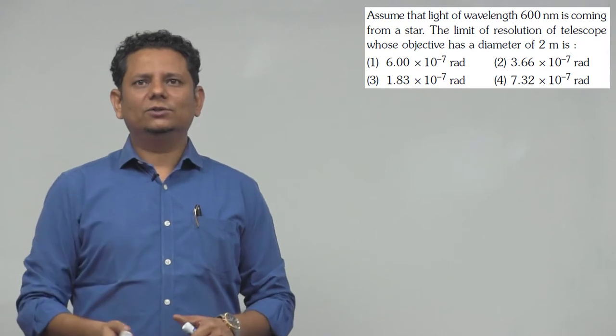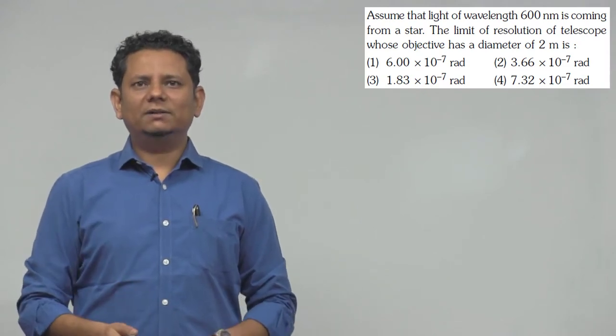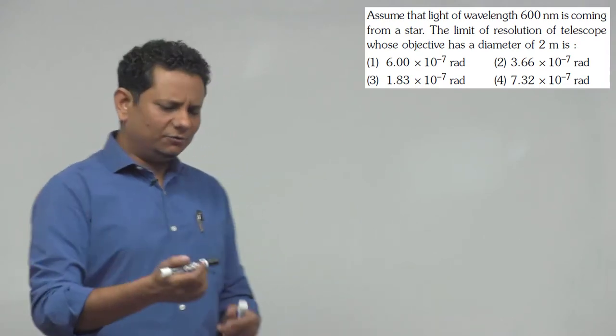Next question. Assume that light of wavelength 600 nanometer is coming from a star. The limit of resolution of telescope whose objective has a diameter of 2 meter is, again, a formula based question.